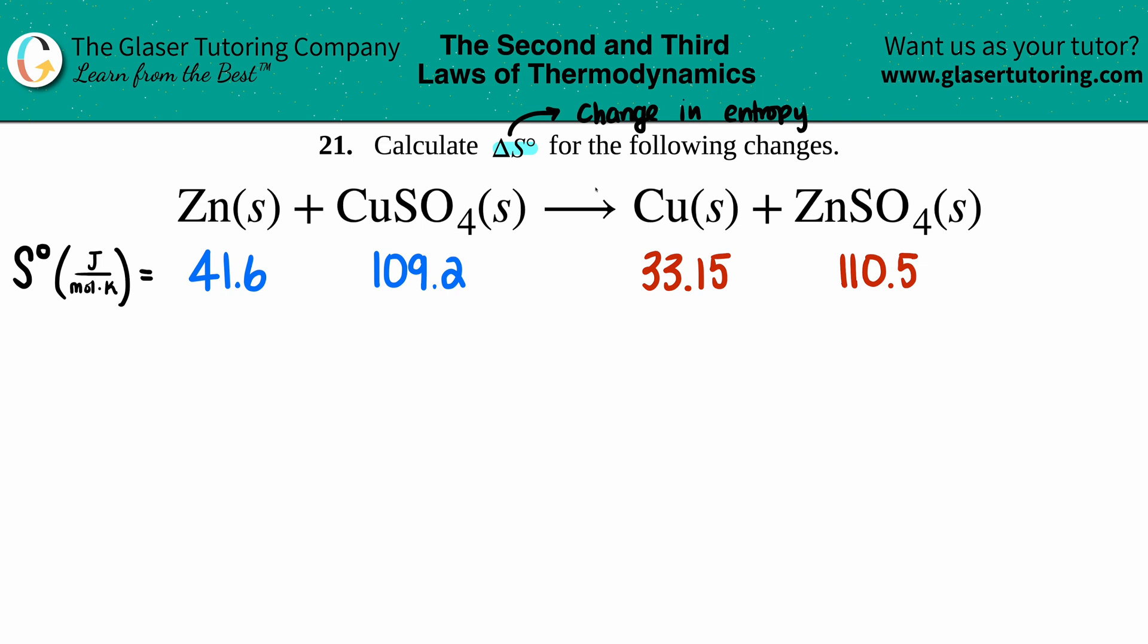The standard values are always going to be in the back of a textbook, so that's what I did for you guys. I went to the back of the textbook to find out what these standard values are. So for zinc solid I have an S value of 41.6, CuSO₄ is 109.2, copper by itself is 33.15, and the ZnSO₄ is 110.5.